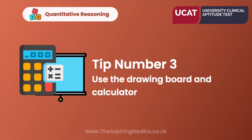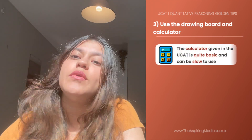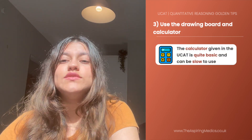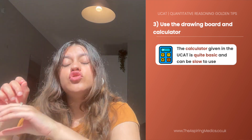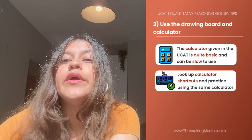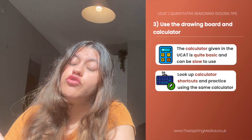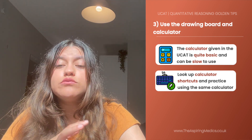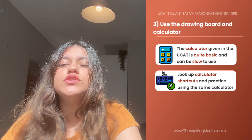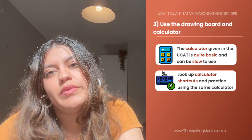Our third tip is to use the drawing board and the calculator. The online calculator that the UCAT exam provides you with is quite a basic one and it can be hard to use if it's the first time that you're using it. We would recommend using that exact same UCAT calculator when you're practicing for the exam, so you become more familiar with what the calculator can and cannot do, and to also learn some shortcuts including the memory functions of the calculator, just so you can save that extra bit of time.